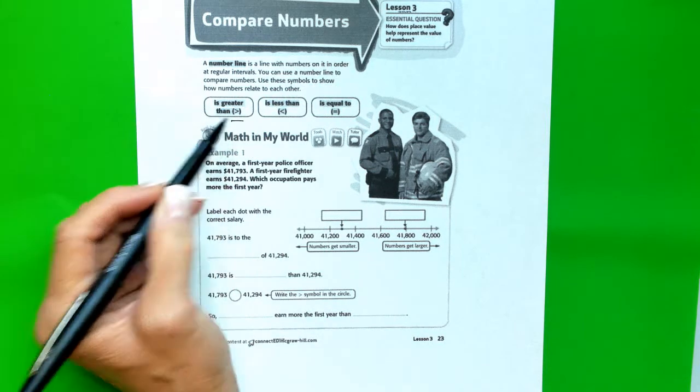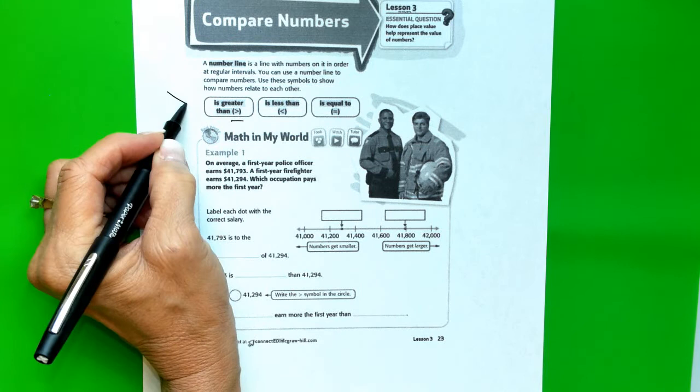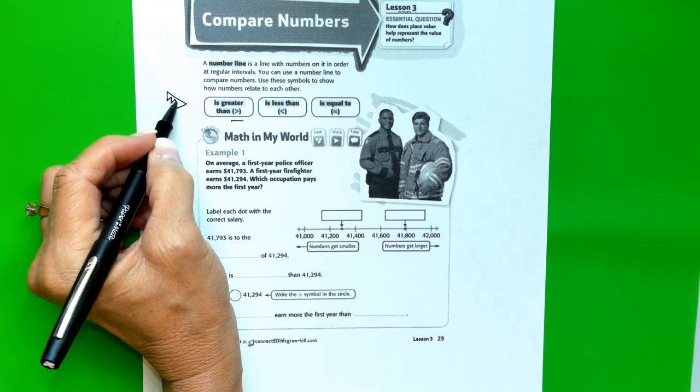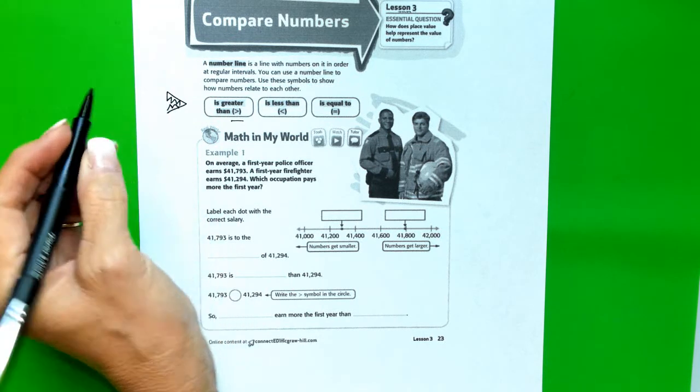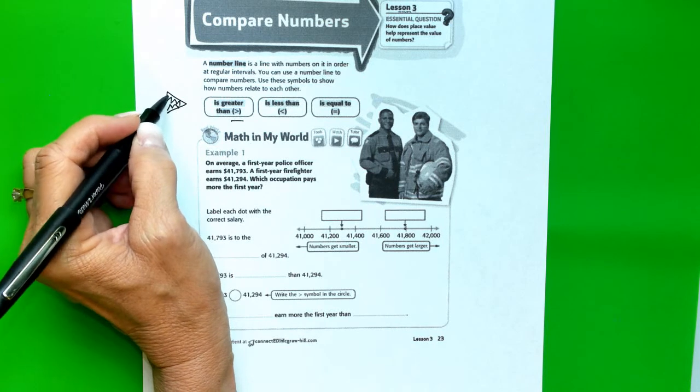So the first symbol is the greater than symbol. Remember, it looks like this. And if you need to, give it teeth to show that it's always going to eat the bigger number.